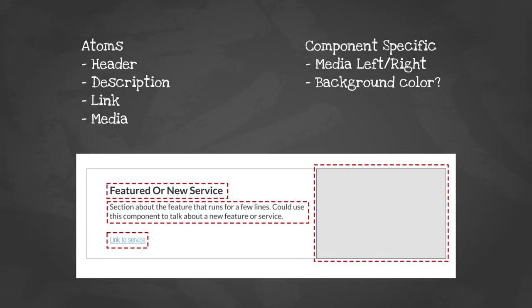Looking at a side-by-side component, when you really break it down in a component system, you're looking at probably four atoms that build up the component, plus a couple component-specific fields. In the red boxes I've highlighted the atoms: a header, description, link, and media field. Component-specific fields include whether the image is on the left or right — everybody always asks that — and potentially a background color option, like dark blue with white text.